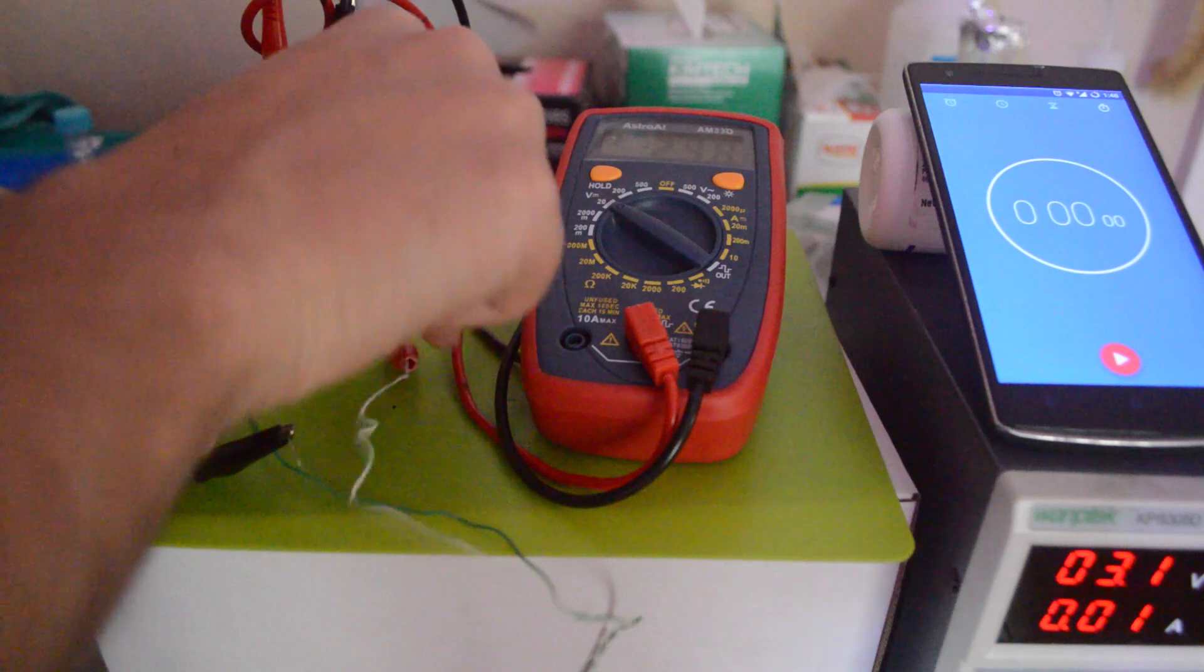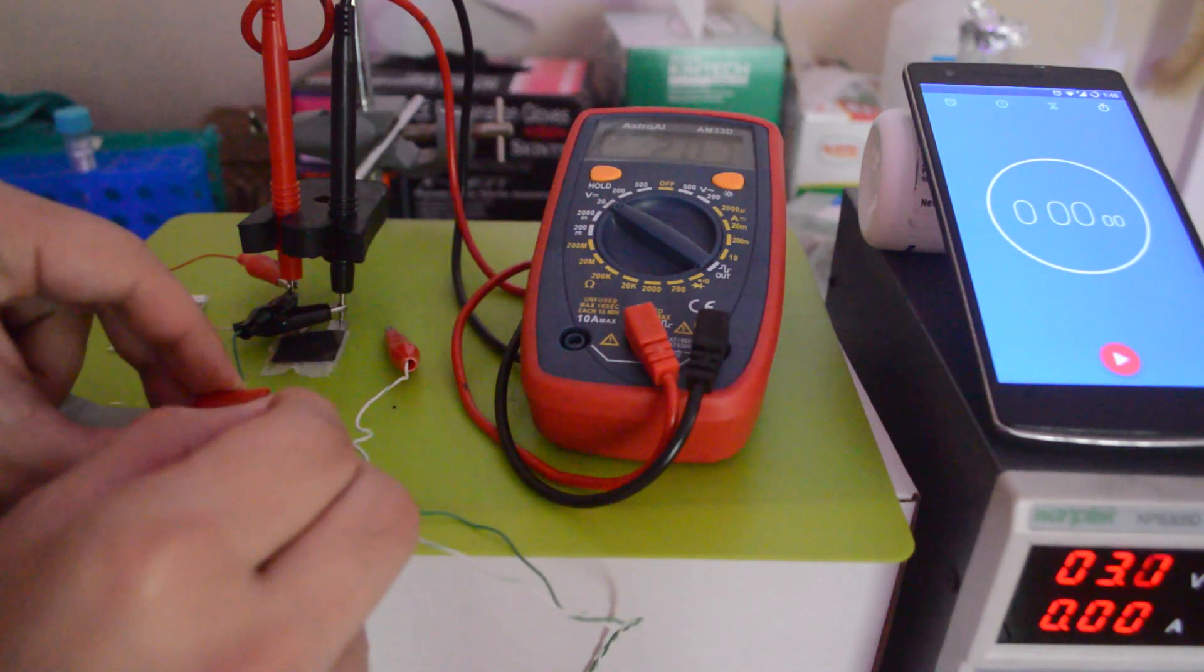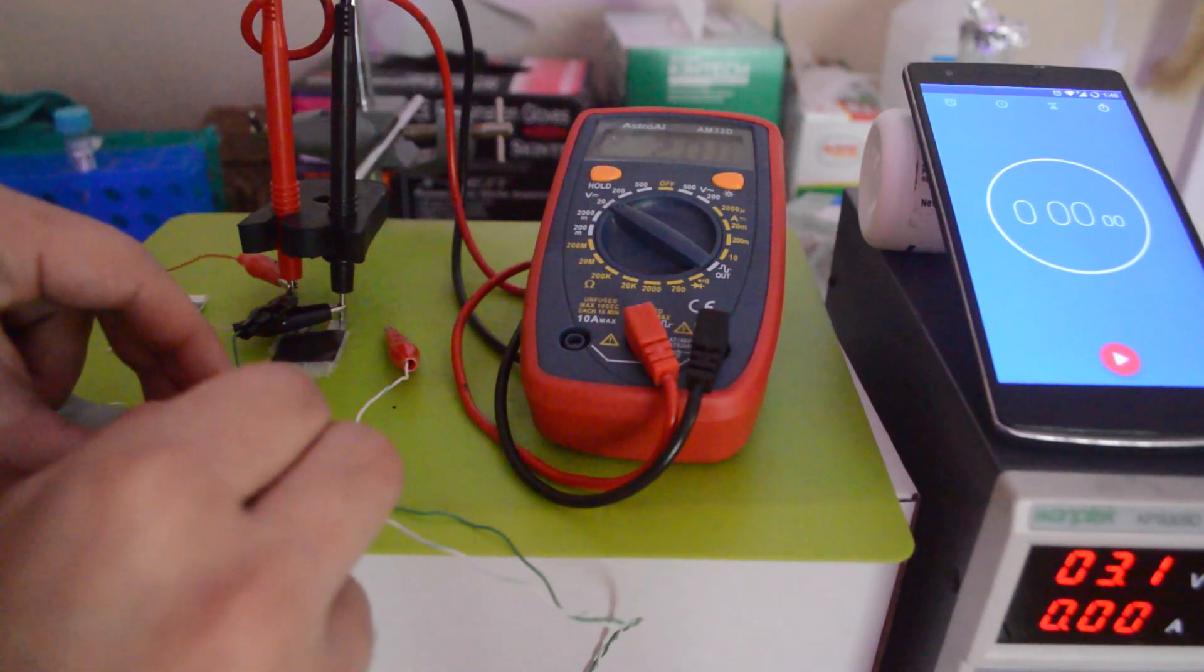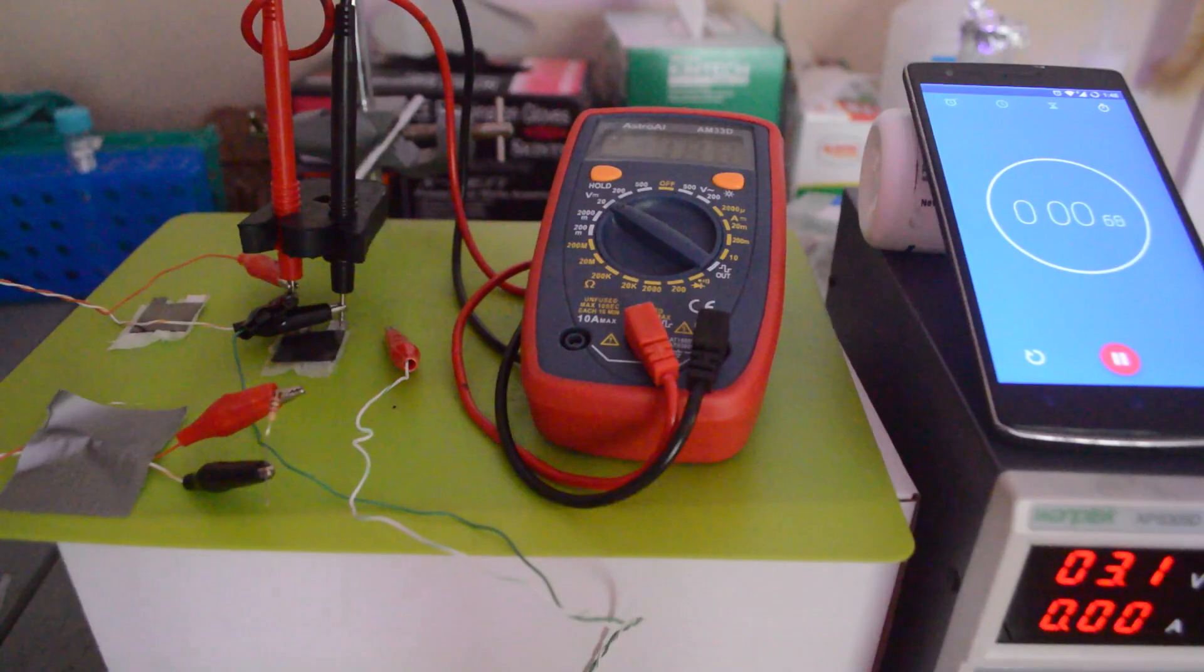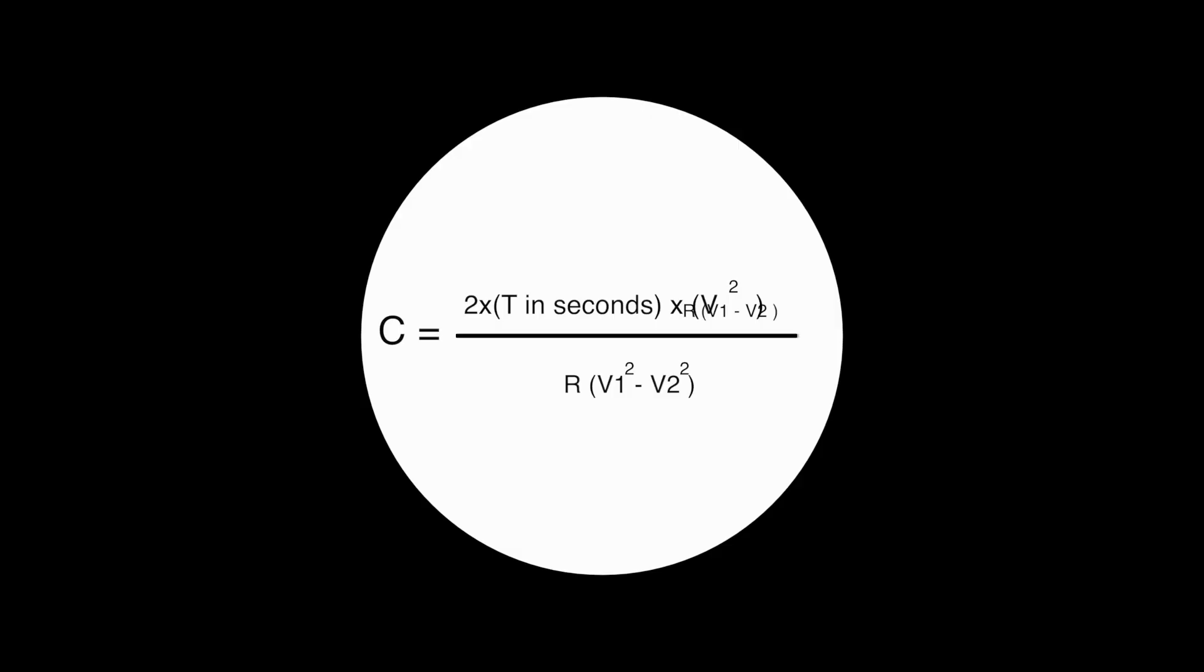But for a more accurate measure of how the cell is performing we're going to measure its capacitance. To do this we charge the cell up to some voltage, I like to use the peak voltage for this, and then measure how long the cell takes to reach some lower voltage while being discharged through a resistor of known resistance. Here I'm using a 1000 ohm resistor. Then we plug our values into this formula, and out pops the capacitance. This is really a slightly rough estimate, as secondary effects can screw with the number, but it's still a good test.